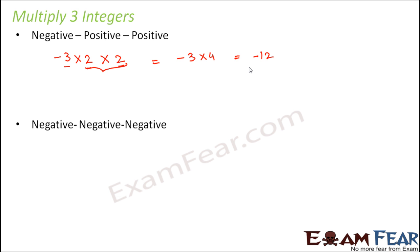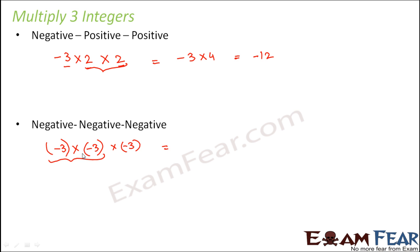Now let's look at the second scenario where you have all three negative integers — something like minus three multiplied by minus three multiplied by minus three. We follow the same process and multiply the first two: minus three times minus three gives plus nine, since two negative signs make a positive. Then plus nine multiplied by minus three — find the product and put a minus sign — giving minus 27.